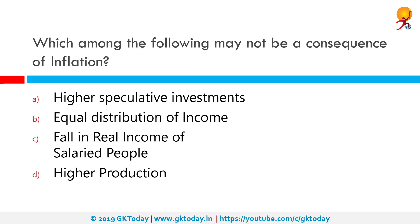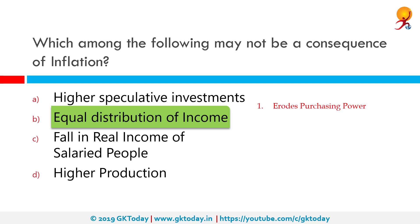Which among the following may not be a consequence of inflation? The correct answer is equal distribution of income. Inflation is a decrease in the purchasing power of currency due to a rise in prices across the economy. A predictable response to declining purchasing power is to buy now rather than later. Unfortunately, the urge to spend and invest in the face of inflation tends to boost inflation in turn, creating a potentially catastrophic feedback loop.